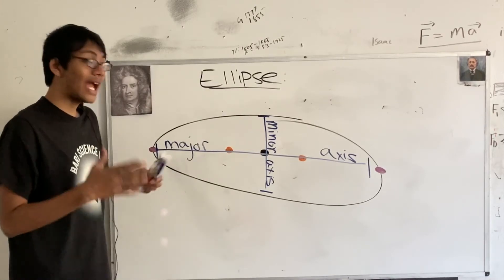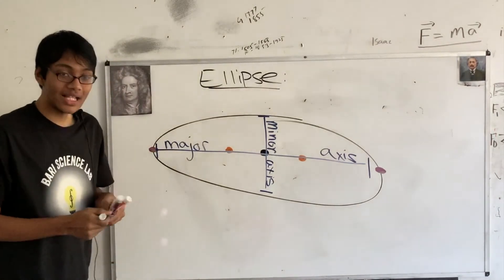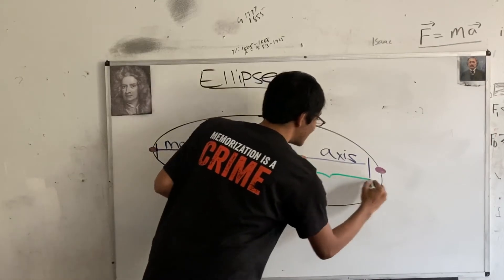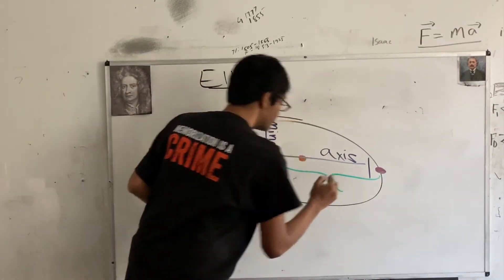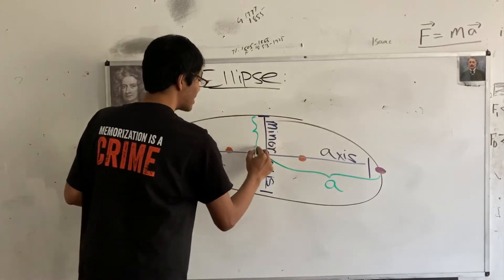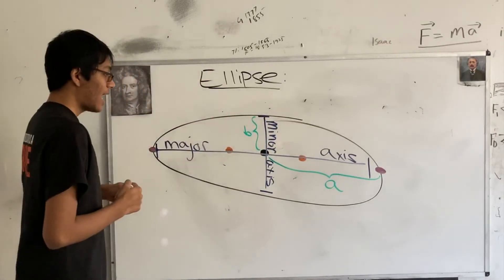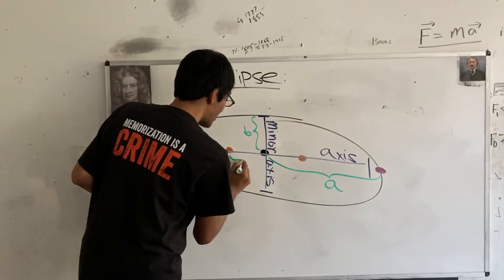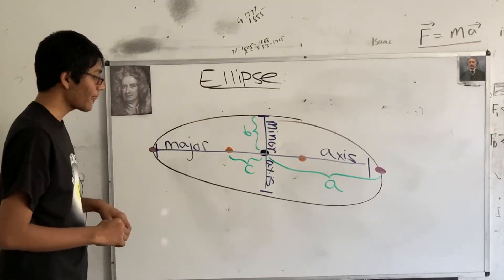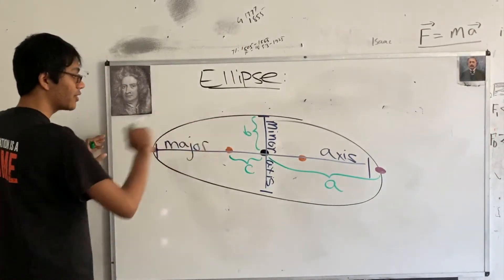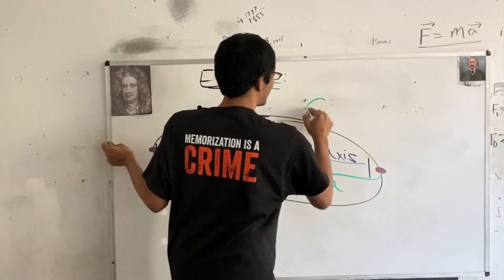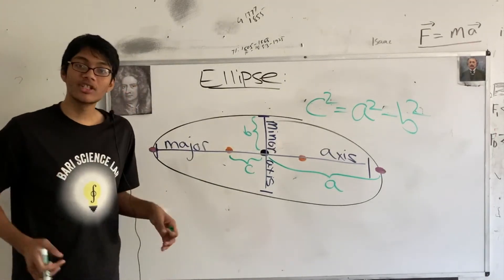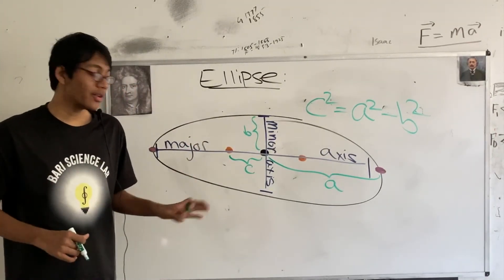To recap: the A value represents the distance from the center to the vertices along the major axis. The B value represents the distance from the center to the upper vertex along the minor axis. The C value represents the distance from the center to the foci. And from these, we get the relationship: c squared equals a squared minus b squared — which you can derive using the Pythagorean theorem.